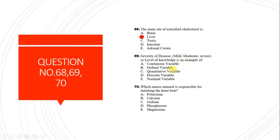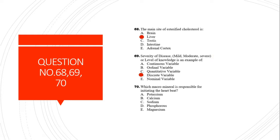Question 69: Severity of a disease - mild, moderate, and severe - or level of knowledge is an example of which type of variable? The answer is ordinal variable, because these are specific categories that are ordered but cannot form a continuous scale, unlike skin color which is a continuous variable.